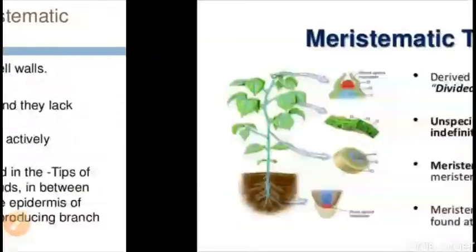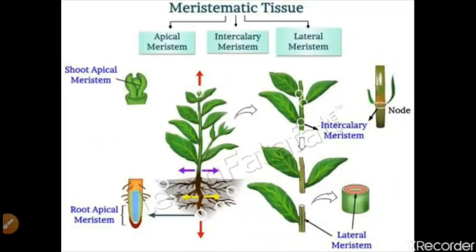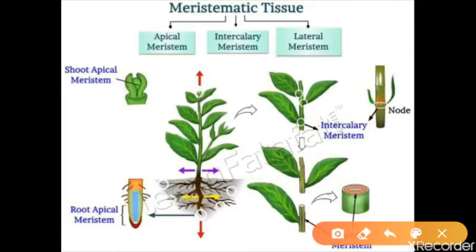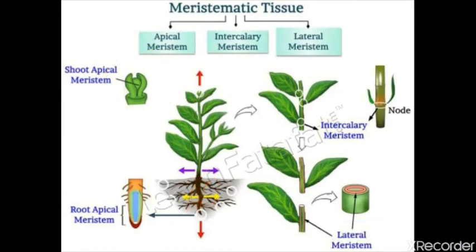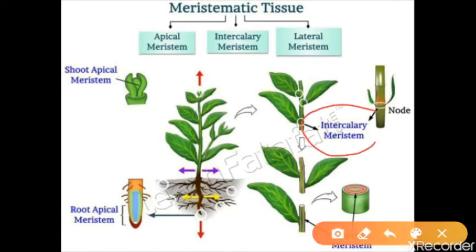To summarize the types once more: apical meristematic tissue is found in the root and shoot parts and helps in increasing the length of the plant. Intercalary tissue is found at the base of internodes and is basically present in grasses and bamboo. It helps in increasing the length of the internodes — increasing what we call 'gathana.'